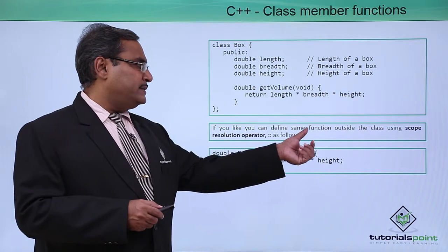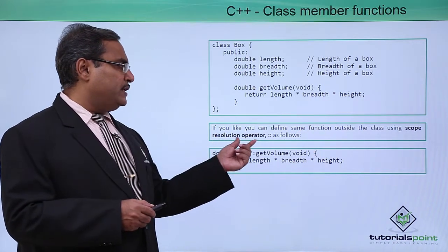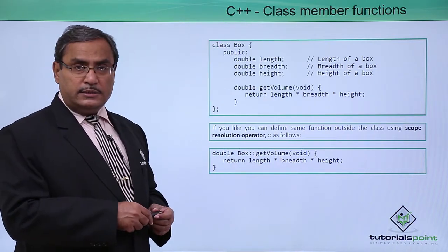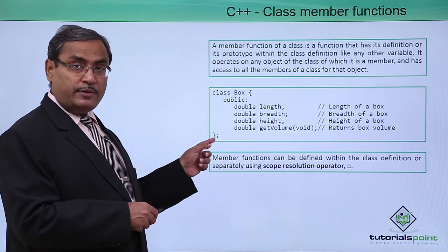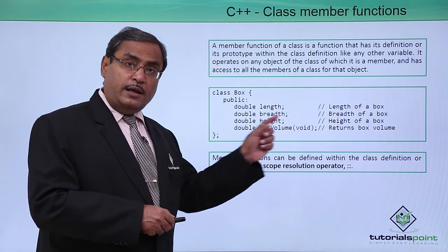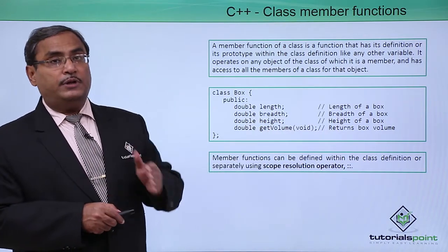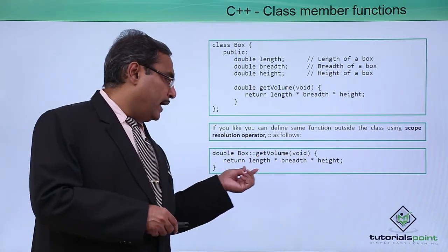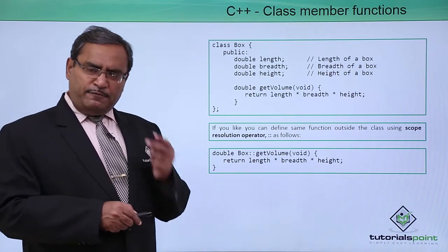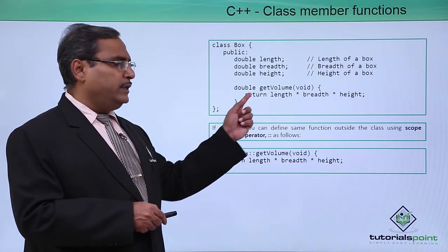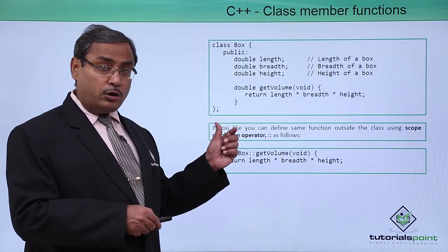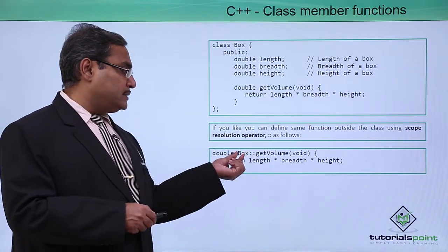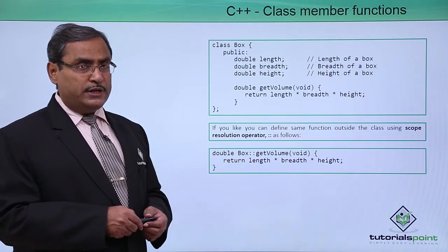If you like, you can define the same function outside the class using the scope resolution operator, that is double colon, as follows. We shall define the class up to the level where only the function prototype is written. Then to define the function outside of the class, you write: double box::get_volume(void) with the respective code. We can define member functions in two ways: either within the class body, or by defining the prototype and then the function body outside the class using class_name::, where :: is known as the scope resolution operator.